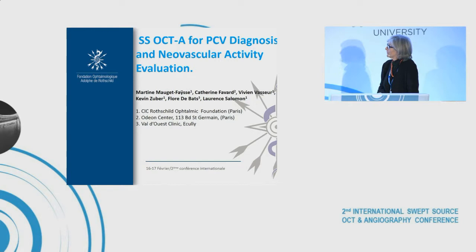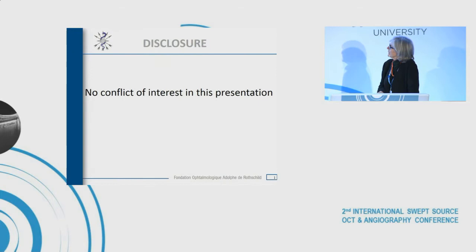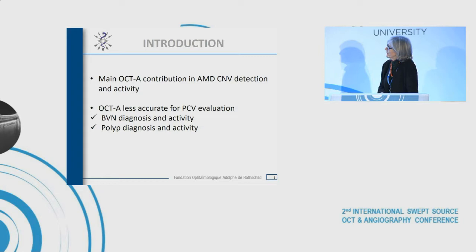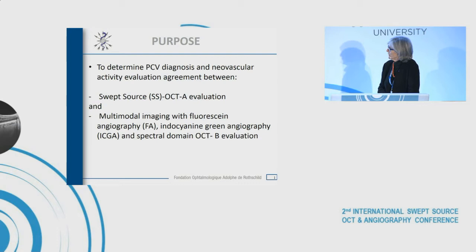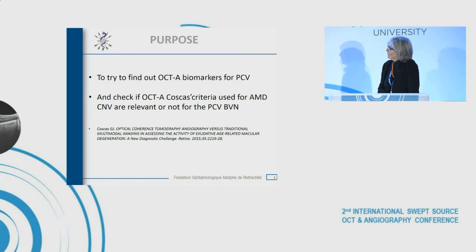We have seen that OCTA brings a great contribution in AMD for CNV detection and evaluation of activity, but OCTA seems less accurate for the evaluation of PCV. The purpose of our study was to determine PCV diagnosis and neovascular activity evaluation agreement between Swept Source OCTA and multimodal imaging with fluorescein angiogram, indocyanine green, and OCT B-scan. We tried to find biomarkers for PCV thanks to OCTA, and check if OCTA COSCAS criteria used for AMD CNV are relevant for evaluation of the activity of the branching vascular network.